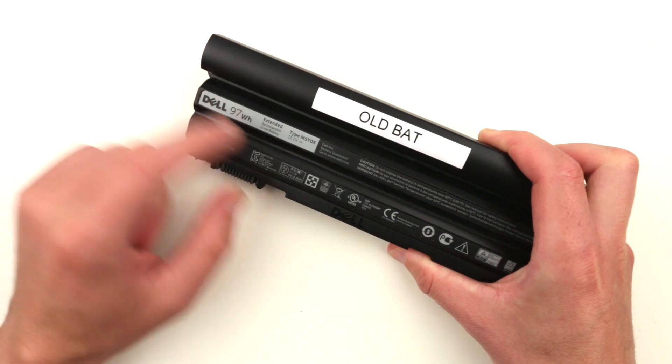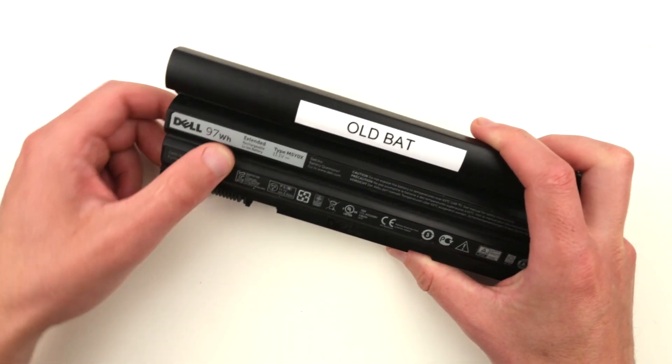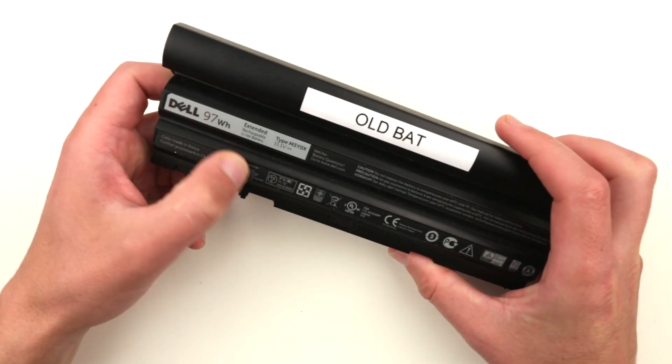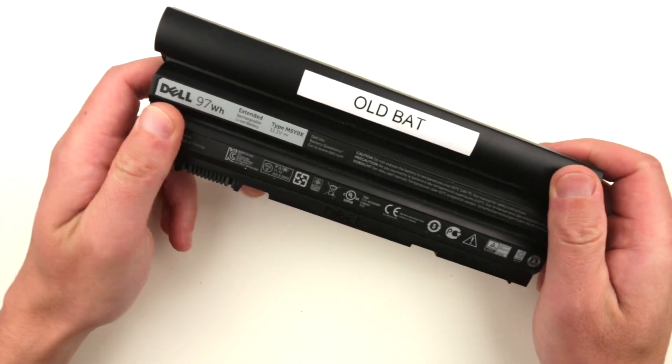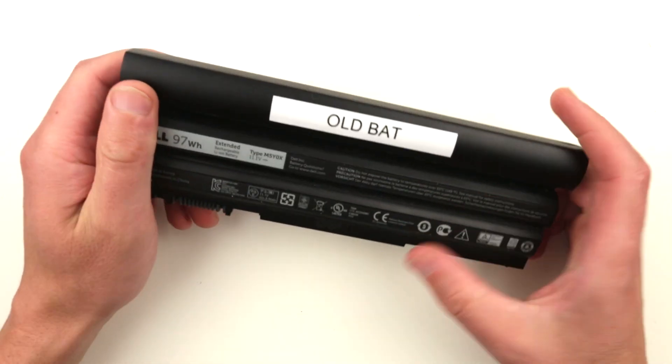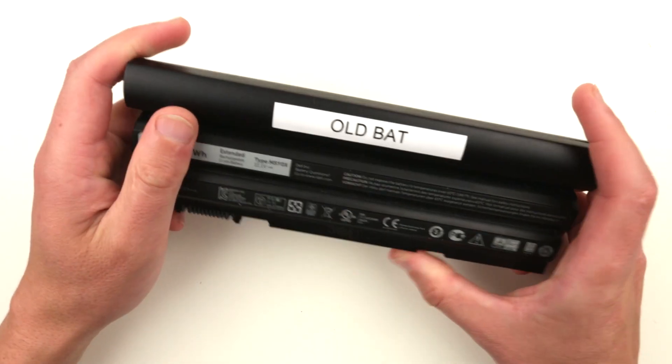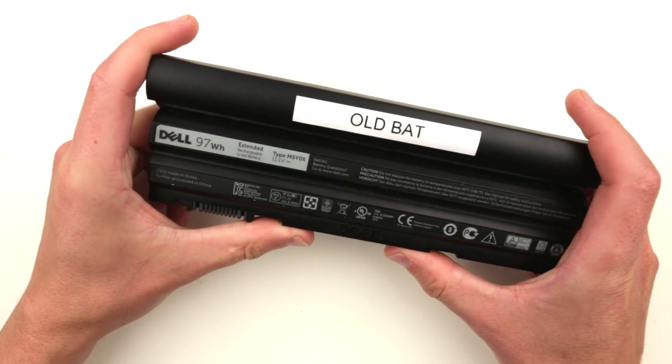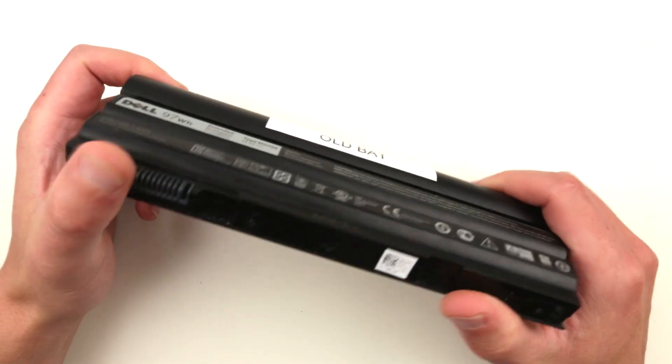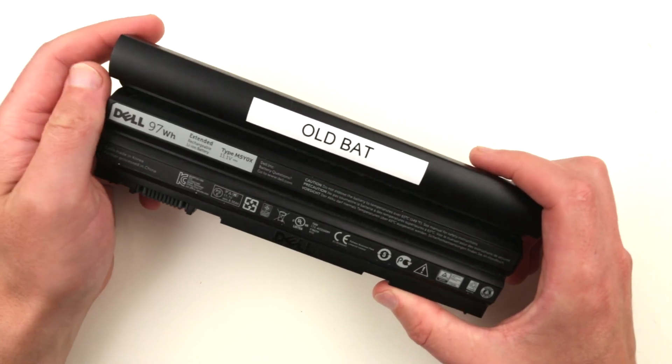This is 97 watt hours, and this is a Dell battery. It actually served me for about three to three and a half years, so it worked well for a while, but now it's completely gone.